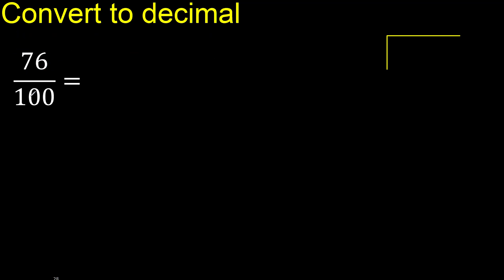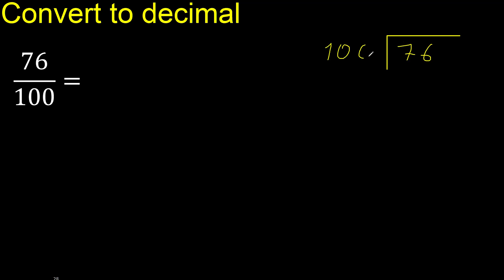76 divided by 100. 76 is less, therefore complete — always complete with 0. Here: 0 point.